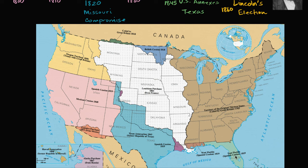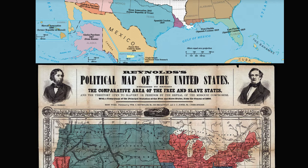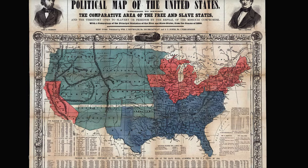We have a map here — this is actually closer to the Civil War period — but if we even look at the original 13 colonies, you can see which ones were free states and which ones were slave states. What you're saying is, the founding of the country, this was already an issue. People in the North weren't fans of slavery, and people knew that at some point this was irreconcilable — or maybe they hoped it would be reconcilable.